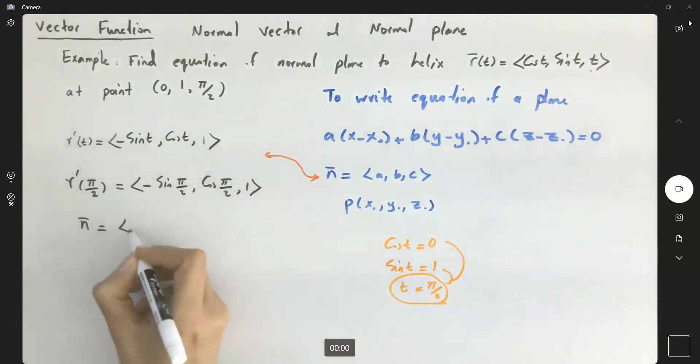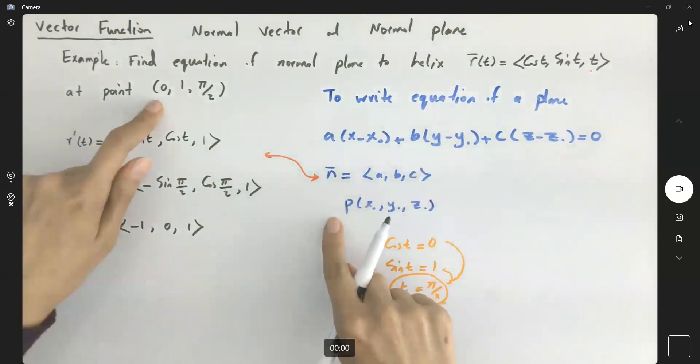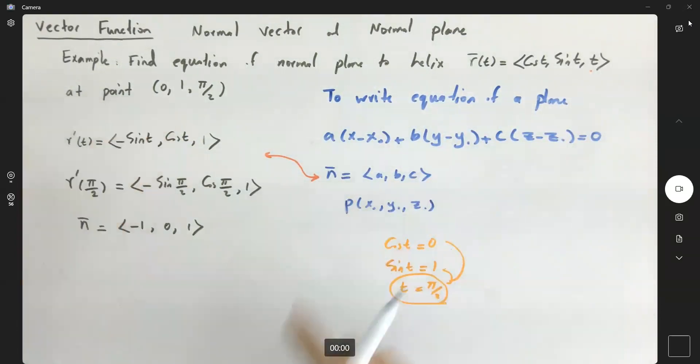So your normal vector is ⟨-1, 0, 1⟩. We have a normal vector, we have one point on the plane, so we're done already. Here we have -1(x - 0) + 0(y - 1) + 1(z - π/2) = 0.